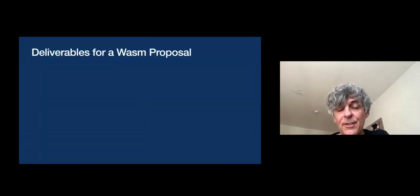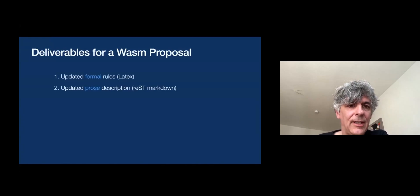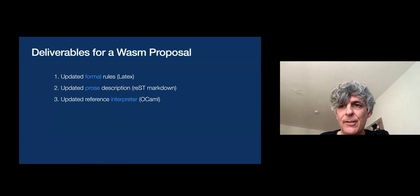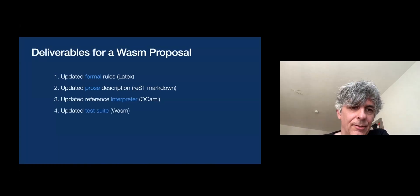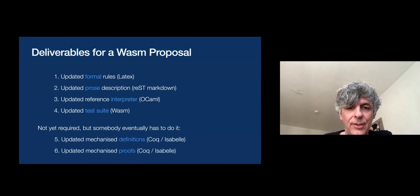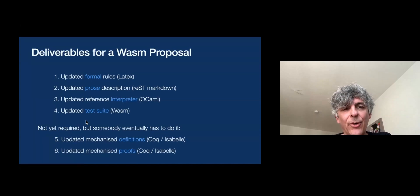These are just some of the artifacts that we have as part of the WebAssembly spec. For every proposal, you have to deliver all these artifacts: the formal rules in LaTeX, the prose, the reference interpreter written in OCaml — which is yet another representation of the same thing — and the test suite. Eventually somebody also has to do all the mechanization work, updating the Coq definitions and proofs. So clearly there's a lot of redundant work here, and that doesn't scale very well.